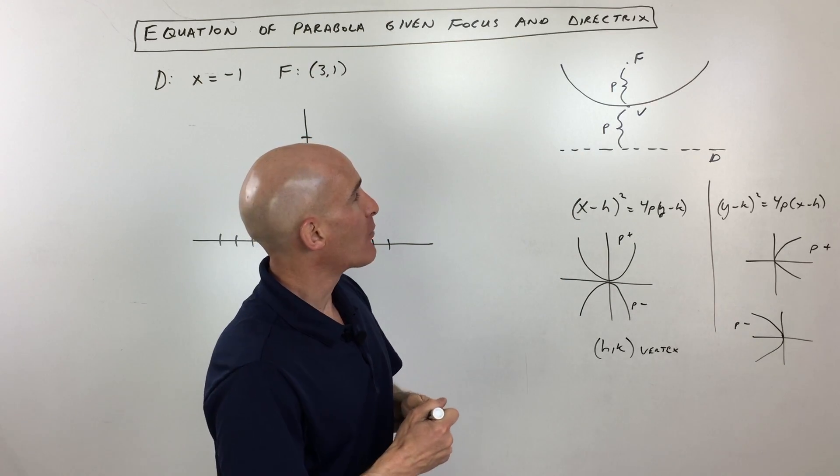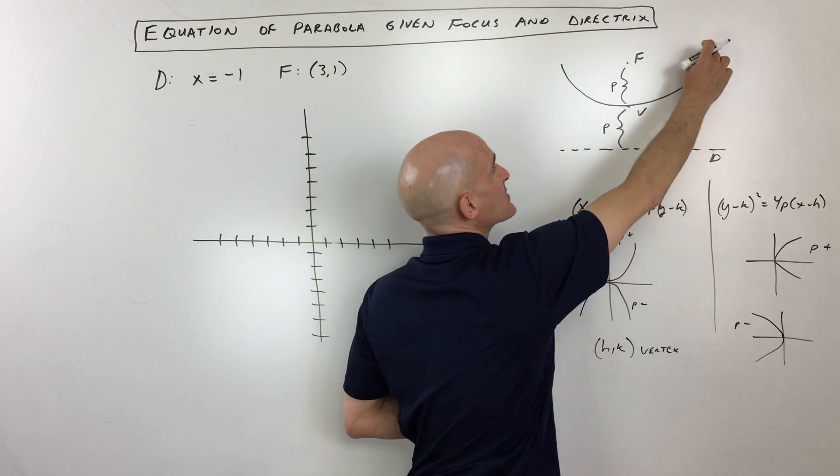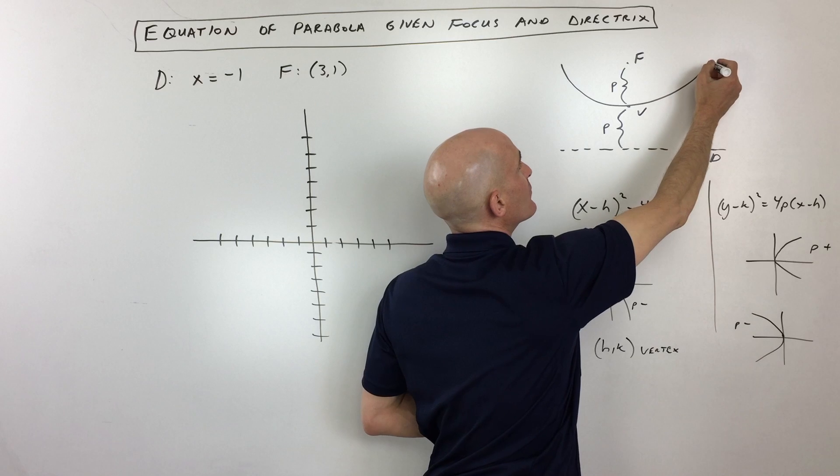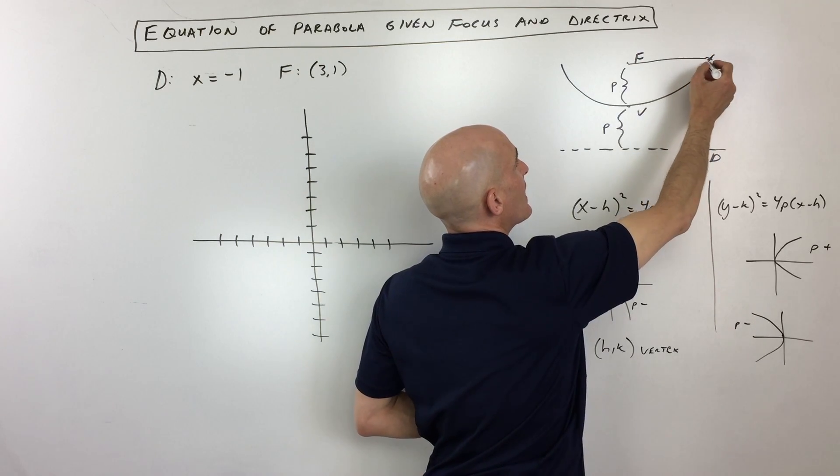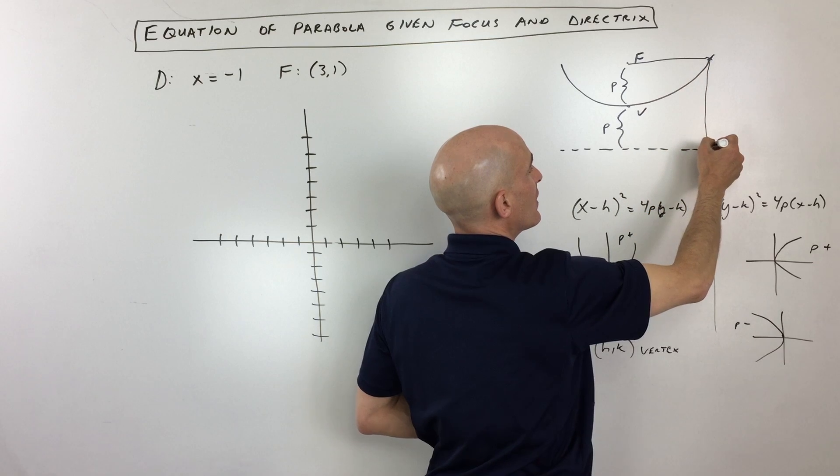A parabola is the set of all points such that if you pick a point on that parabola and you measure the distance to the focus and you measure the distance to a line called the directrix, those distances are always going to be the same.